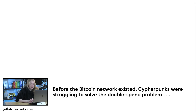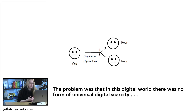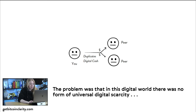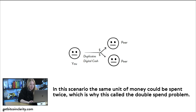To answer that, we have to go back before the Bitcoin network existed. Cypherpunks were struggling to solve the double spend problem. In the digital world, cypherpunks wanted a way to send value peer-to-peer like cash — when I have cash and want to pay you, I take it out of my wallet and hand it to you. There was no good way to do this digitally because of the double spend problem. There was no real digital scarcity — if I had a file called 'cash.png' and wanted to hand it to you, there was no way to know whether I had copied it first. It was impossible to stop someone from copying or duplicating data, and the same unit of money could be spent twice — hence the double spend problem.